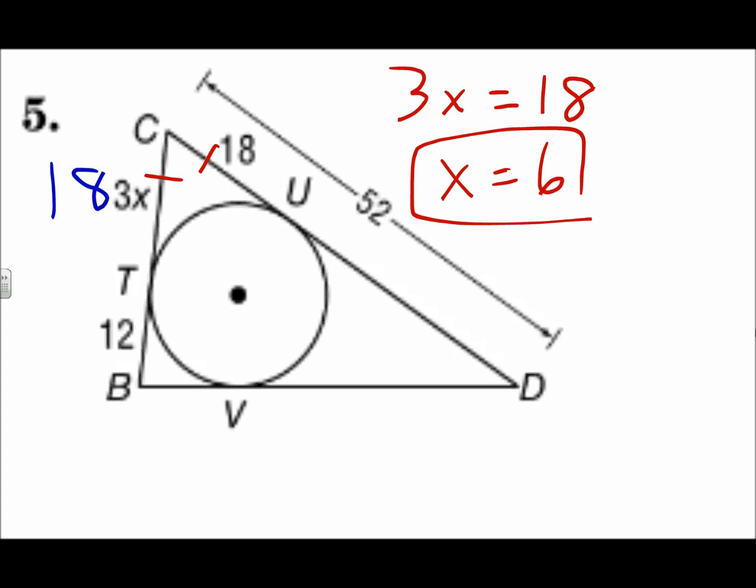I can go ahead and put an 18 over here for segment C, T. As I work my way around, if segment T, B is 12, segment V, B is also 12. On the top, I need to do some segment addition. The whole thing is 52. One part is 18. 18 plus what gets you the whole thing 52? So, that has to be 34, because 18 plus 34 is 52,